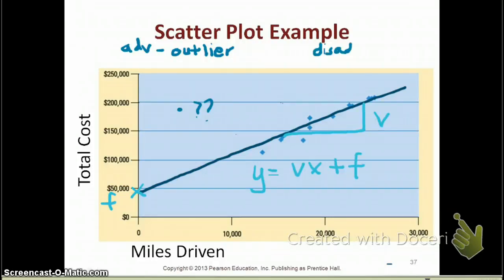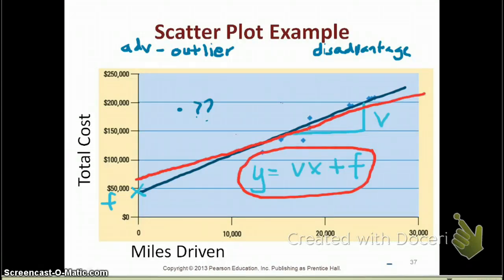What is the disadvantage? Disadvantage is that it's a subjective line that I just draw. That's my line. If I ask any of you to draw a line, you may draw a separate line, which might look like that. So the disadvantage of scatterplot is that it's subjective. And when you draw a different line, your cost equation will be different because if you notice, my cost equation, the fixed costs are here, but the one that somebody else would draw, it changes. So it's a subjective line that we're drawing here. And that is the disadvantage with your scatterplots.